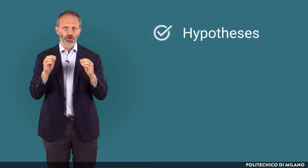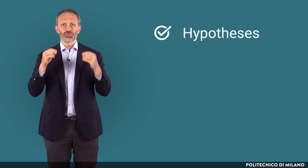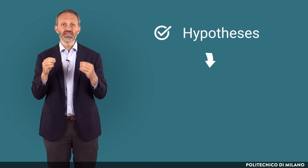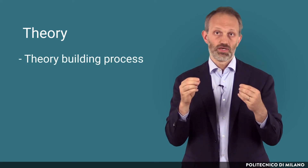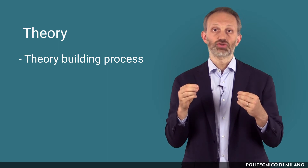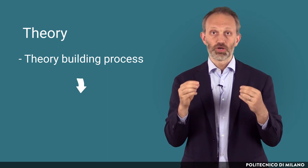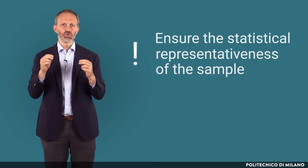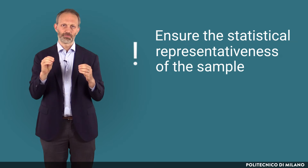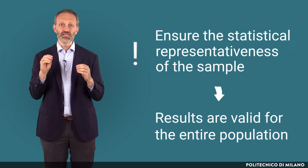If our hypotheses are confirmed and our results confirm the original theory, this means that we are providing empirical support for our theory and we can generalize its validity. Often the theory we want to test has been developed through a theory-building process, often based on a qualitative study and a limited sample. Therefore, the purpose of our survey is indeed to generalize the theory, which is why it is so important to ensure the statistical representativeness of our sample — so we can conclude that our results are valid for the entire population.